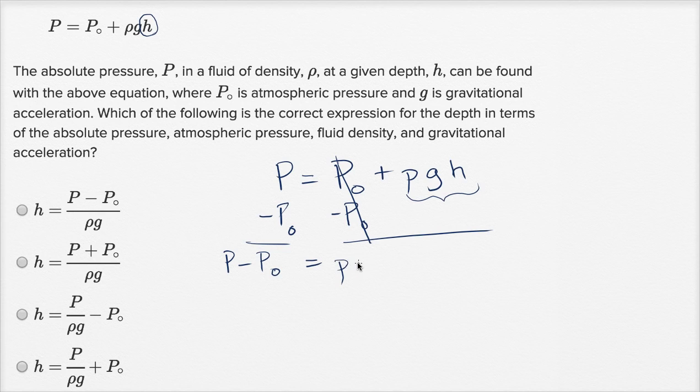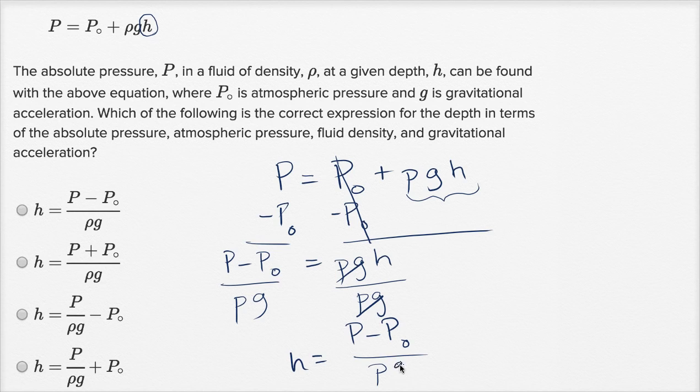And now to solve for h, I can divide both sides by rho times g. So let's do that, divide this side by rho times g and this side by rho times g. Rho times g divided by rho times g is just going to be one, and we get h is equal to this thing right over here. We could say h is equal to capital P minus capital P sub zero over rho times g. And that is the first choice right over there.